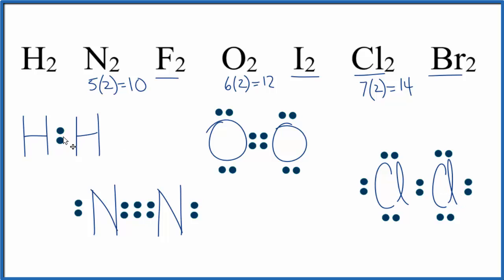We could replace these bonds between atoms with a single line to show that we have these single, double, and triple bonds. Let's do that. So the single line, that represents a pair of electrons shared between atoms.